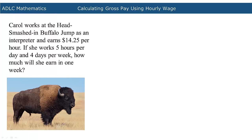In this video, we will calculate the gross pay received using hourly wages. Carol works at the Head-Smashed-In Buffalo Jump as an interpreter and earns $14.25 per hour. If she works 5 hours per day and 4 days per week, how much will she earn in one week?